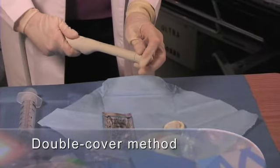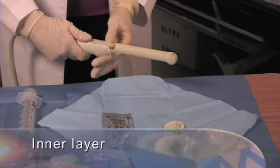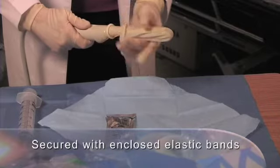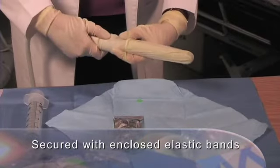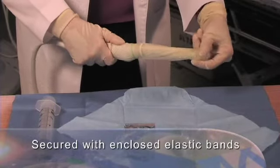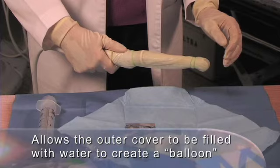This involves placement of one cover that forms the inner layer. This cover must include the gel covering the transducer face. Both the inner and the outer cover are secured to the transducer with enclosed elastic bands. This allows the outer cover to be filled with water to create a balloon that will displace any air between the cover and the wall of the rectum.